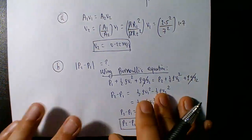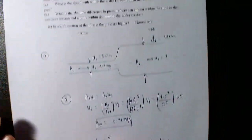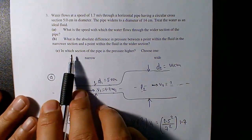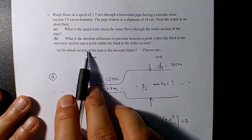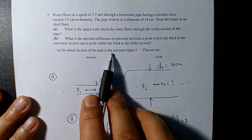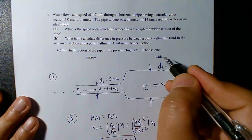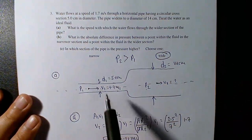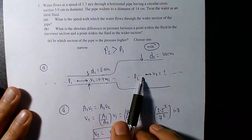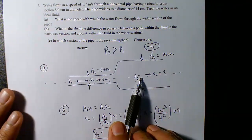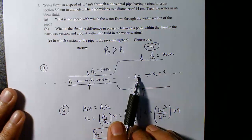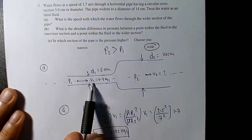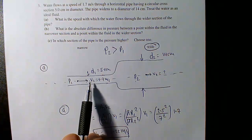Part c is conceptual: in which section is the pressure higher? The answer is the wider section, where p2 is greater than p1. This is because the fluid flows at a slower rate in the wider section. Recall that faster-moving fluid has less pressure, so since water flows faster in the narrow section, pressure must be lower there.